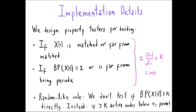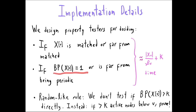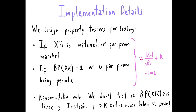To finish, I should admit we skipped a number of implementation details. In the paper we give efficient property testers that decide when a node is matched or far from being matched, and when a node has block periodicity 1 or is far from being periodic — both running within the promised time budget. We also do not explicitly test for large block periodicity to trigger the random-like rule; instead, if we are at a matched node and detect more than k active nodes below it, we immediately conclude the block periodicity is large and apply the random-like rule.